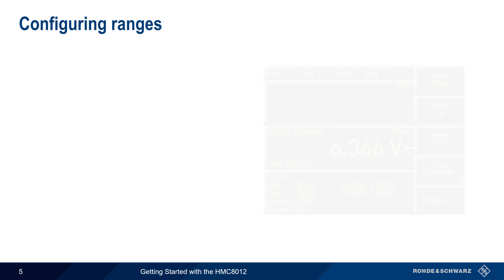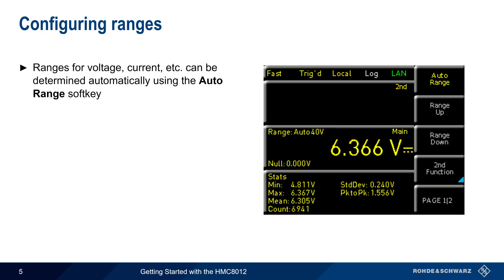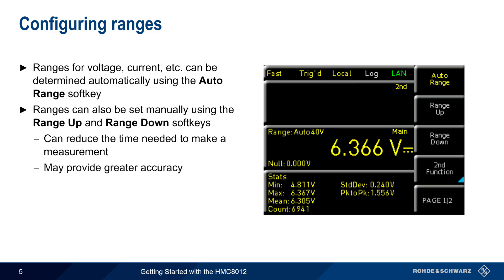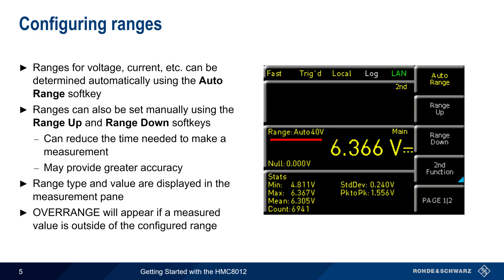Most multimeter measurements require a range to be set, and the easiest way to do this on the HMC is using the auto range function, which senses the measured quantity and sets the range automatically. Ranges can also be set manually using the range up and range down soft keys. Manually defining the range can reduce measurement time and may also provide greater measurement accuracy. The type of ranging and the range value are displayed in the measurement result pane, and the word 'over range' will be displayed if the measured value is outside of the configured range.